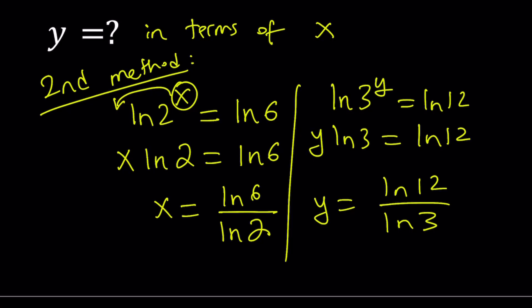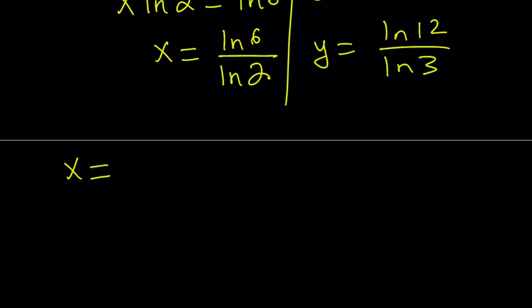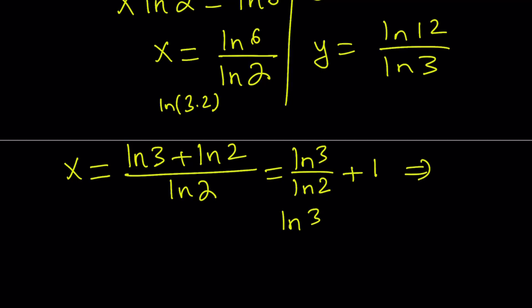Let's go ahead and simplify this expression. First of all, I'm going to start with x and write the ln(6) as ln(3×2). So remember, log of a product is the sum of logs. So we can write this as ln(3) + ln(2) divided by ln(2). And now we can separate this and write it as ln(3)/ln(2) + ln(2)/ln(2), which is 1.